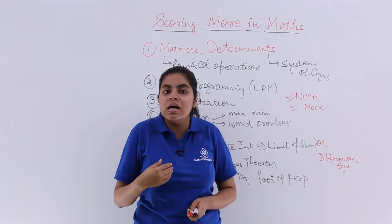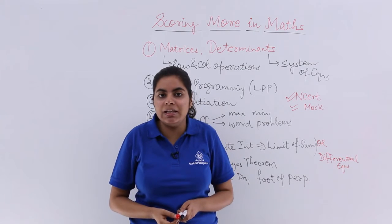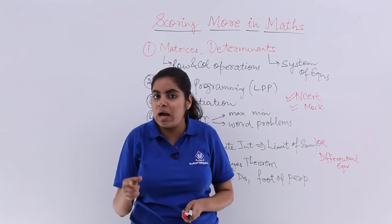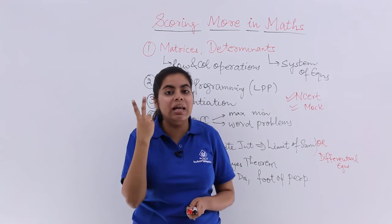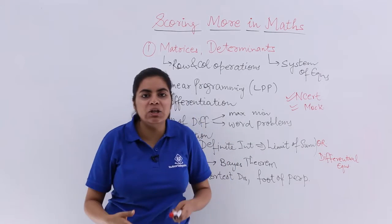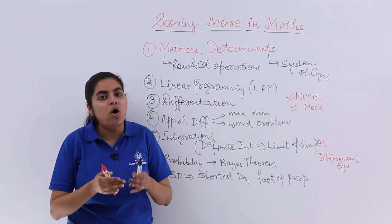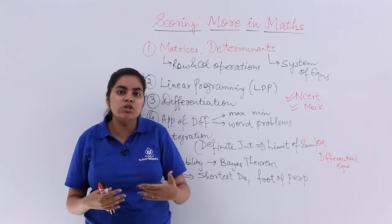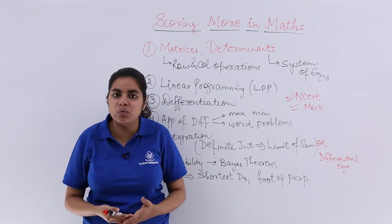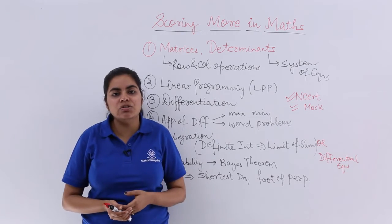Then check with the answer key and give yourself marks. You will come to know that, okay, although I thought that I did this question correctly, but according to the marking scheme, I am not getting 6 out of 6 in this question. I am getting only 4. So I am lagging by 2 marks and that I need to cover up in the examination. Always discuss with your teachers, show them your test papers that you are doing at home, practicing at home. Ask them for suggestions.